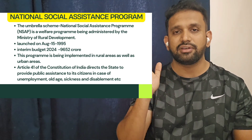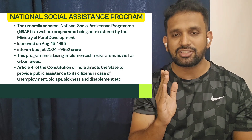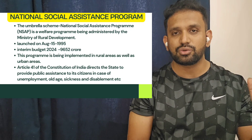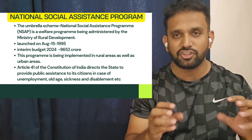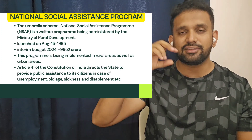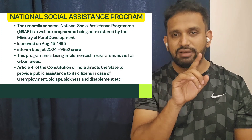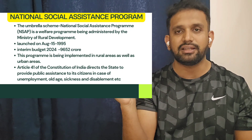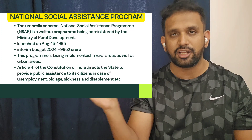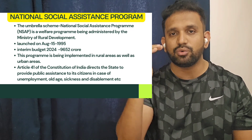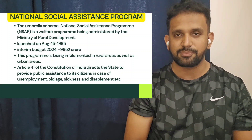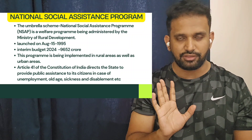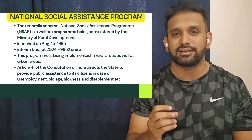Under the National Social Assistance Programme we have: Indira Gandhi National Old Age Pension Scheme, Indira Gandhi National Widow Pension Scheme, Indira Gandhi National Disabled Pension Scheme, National Family Benefit Scheme, and the Annapurna Scheme. All these schemes are there under this particular programme, which is why it is called an umbrella scheme. The benefit is given in the form of cash or kind to the beneficiaries.